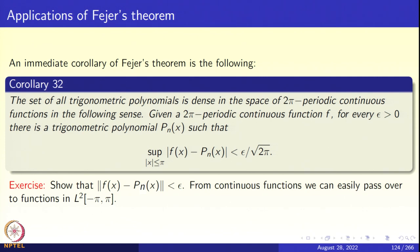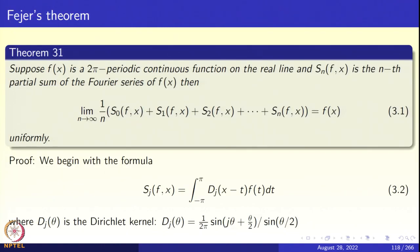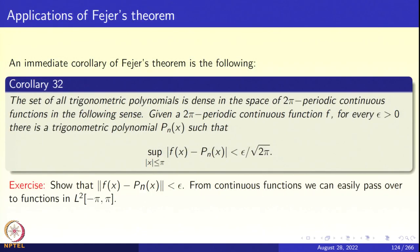What is this arithmetic mean (1/n)(S_0 + S_1 + ⋯ + S_n)? S_j is the jth partial sum of the Fourier series, so S_j itself is a trigonometric polynomial. Therefore S_0 + S_1 + ⋯ + S_n divided by n is also a trigonometric polynomial. This sequence of trigonometric polynomials converges uniformly to f(x), so Fejér's theorem immediately gives us that the trigonometric polynomials are dense in the space of 2π-periodic continuous functions with respect to the sup norm. That is a very important corollary.